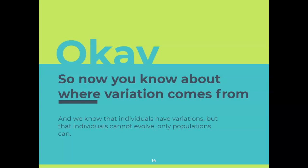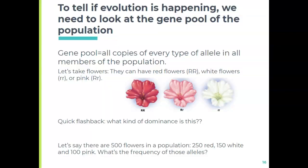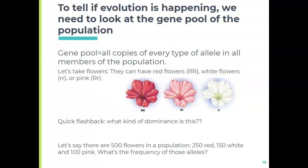We've established that populations evolve, not individuals. So how can we actually tell if evolution is happening? We have to look at the gene pool — specifically at the different alleles present. For example, with red, pink, and white flowers in incomplete dominance: if there are 500 flowers — 250 red, 150 white, and 100 pink — we can figure out the frequency of these alleles, meaning how many big R's and how many little R's there are.